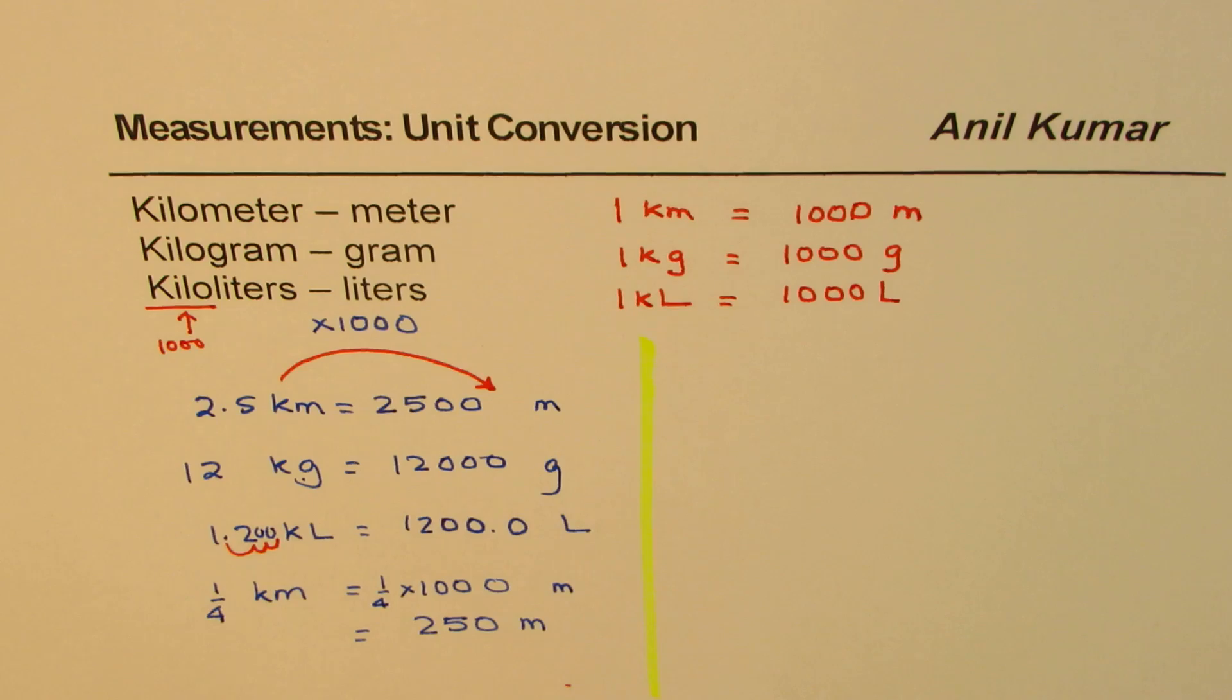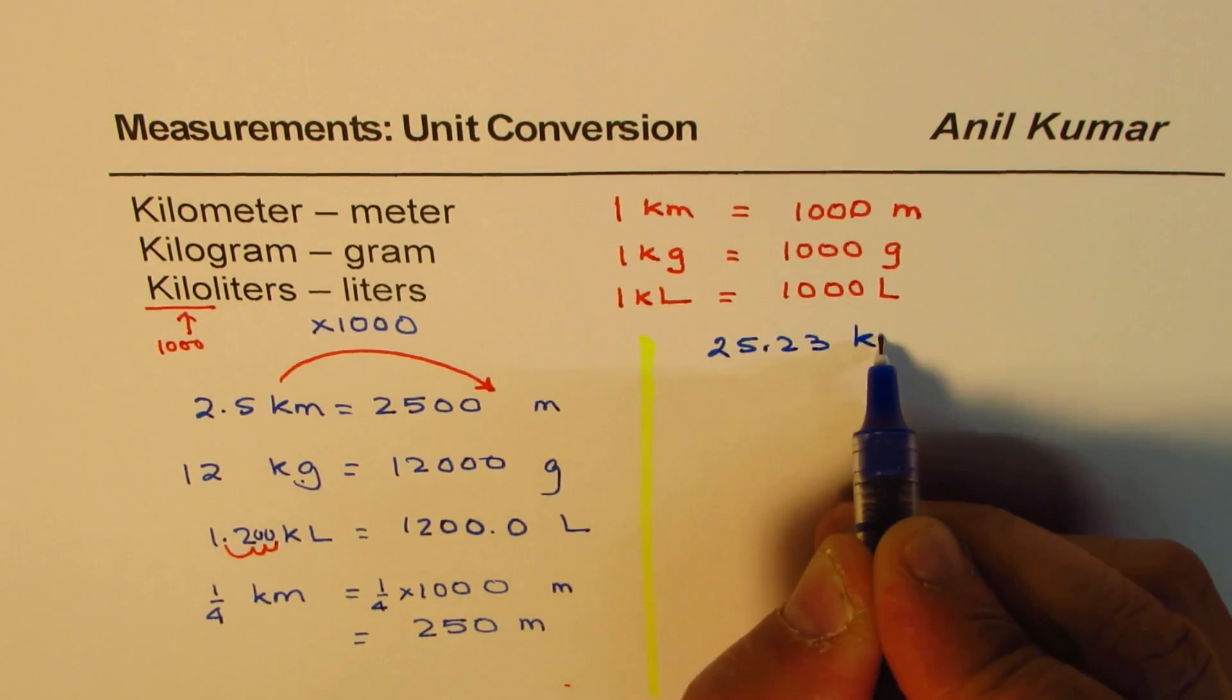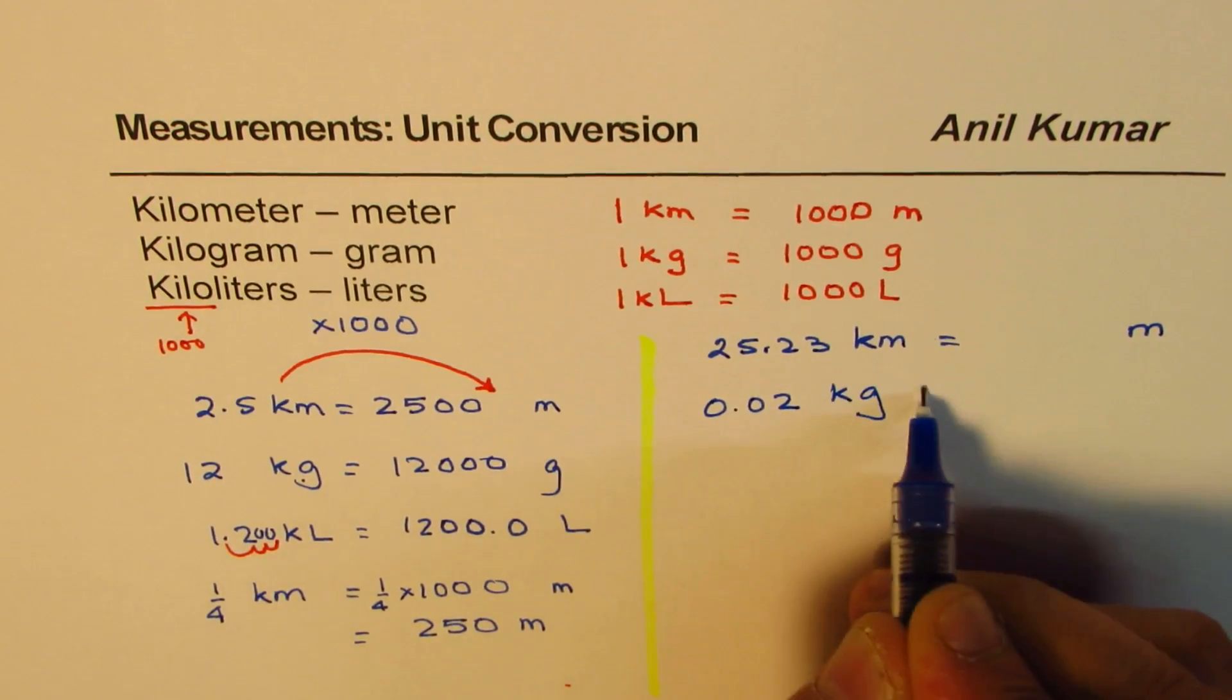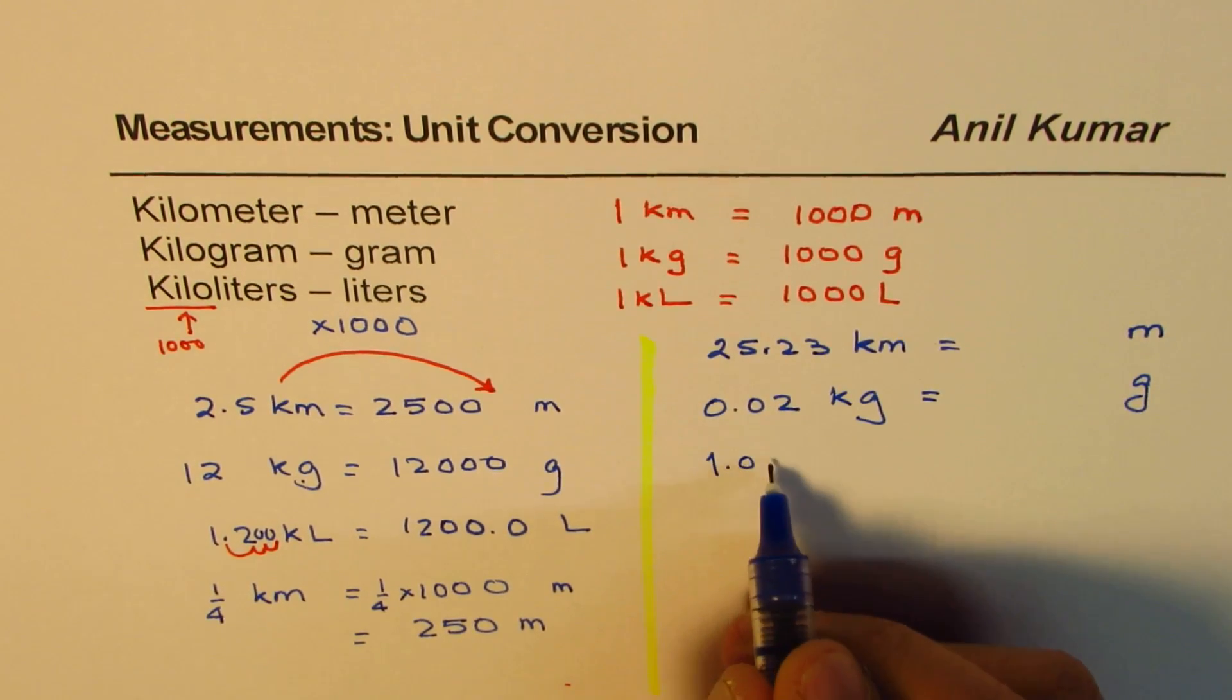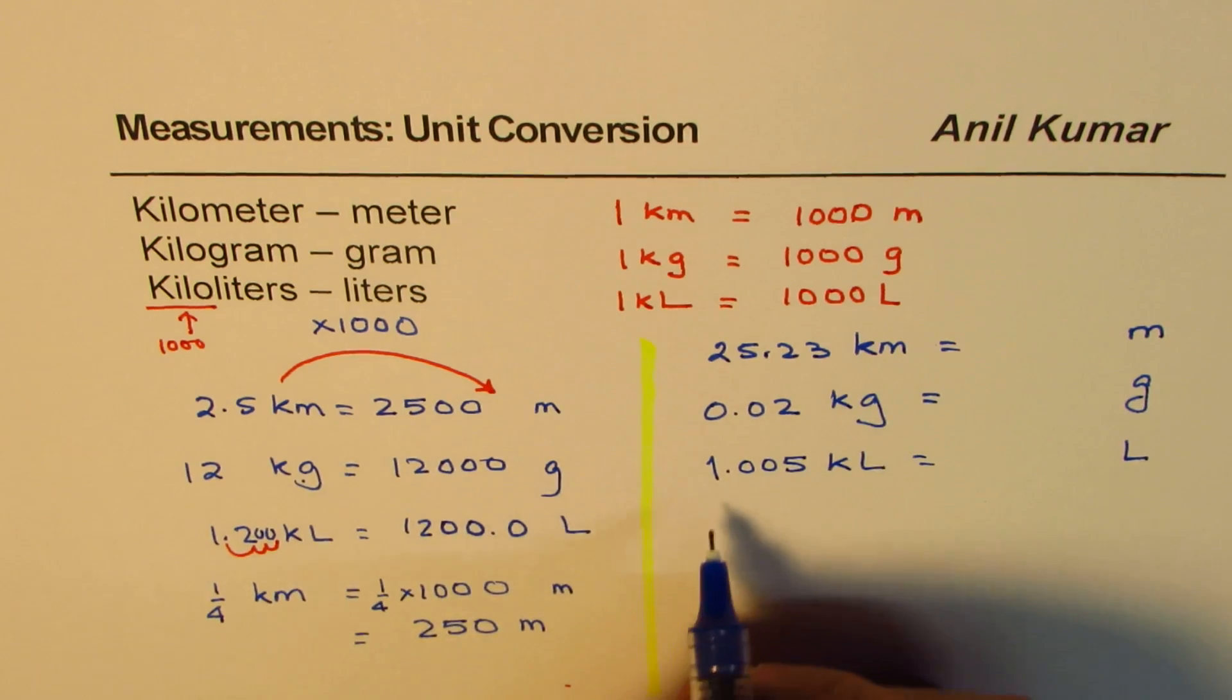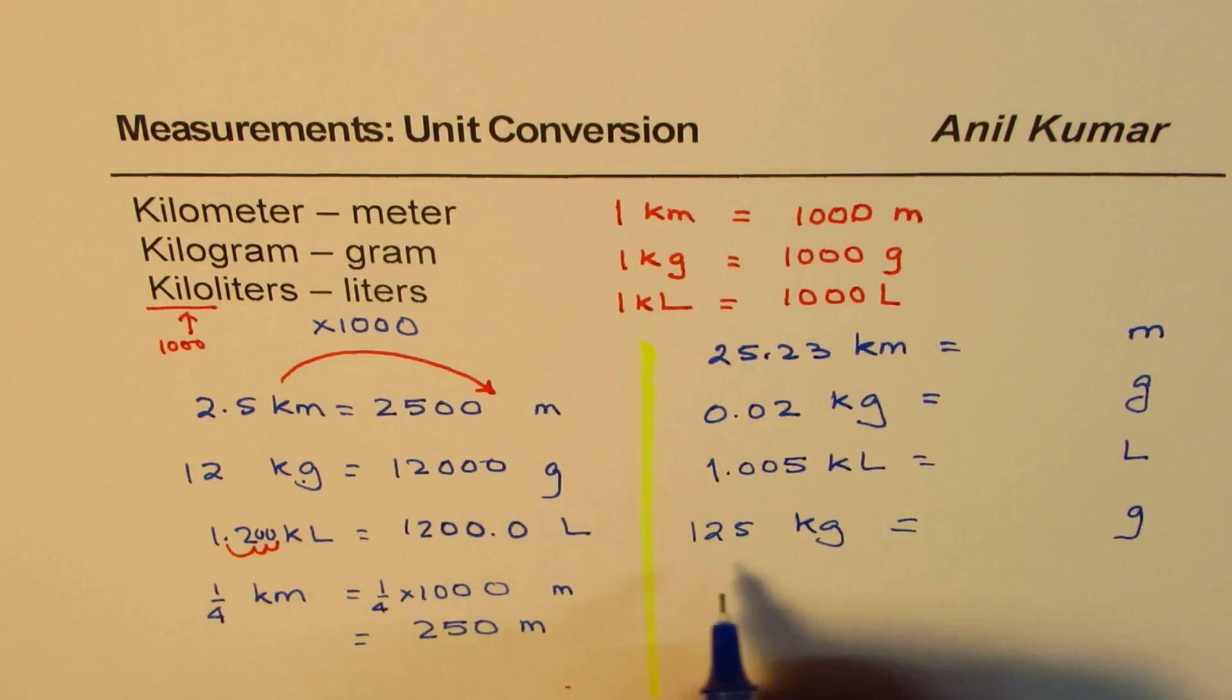So here are a few practice questions for you. Let's say we have 25.23 kilometers equals to how many meters? And then we have 0.02 kilograms equals to how many grams? We have 1.005 kiloliters, you have to write how many liters. Let's do some more. We have 125 kilograms, which will be how many grams?